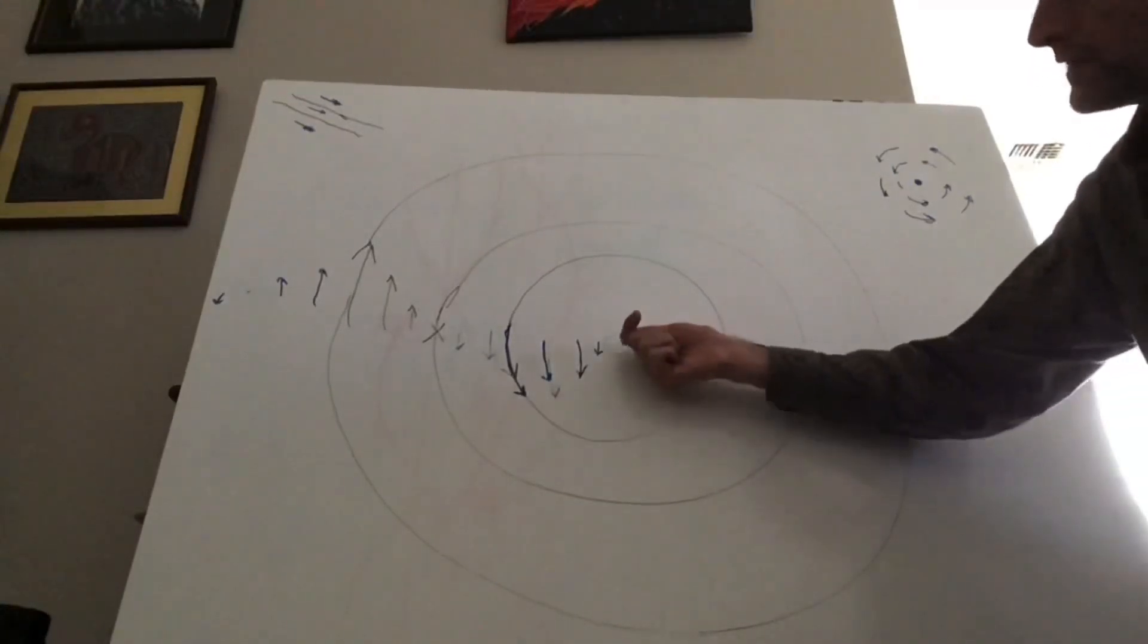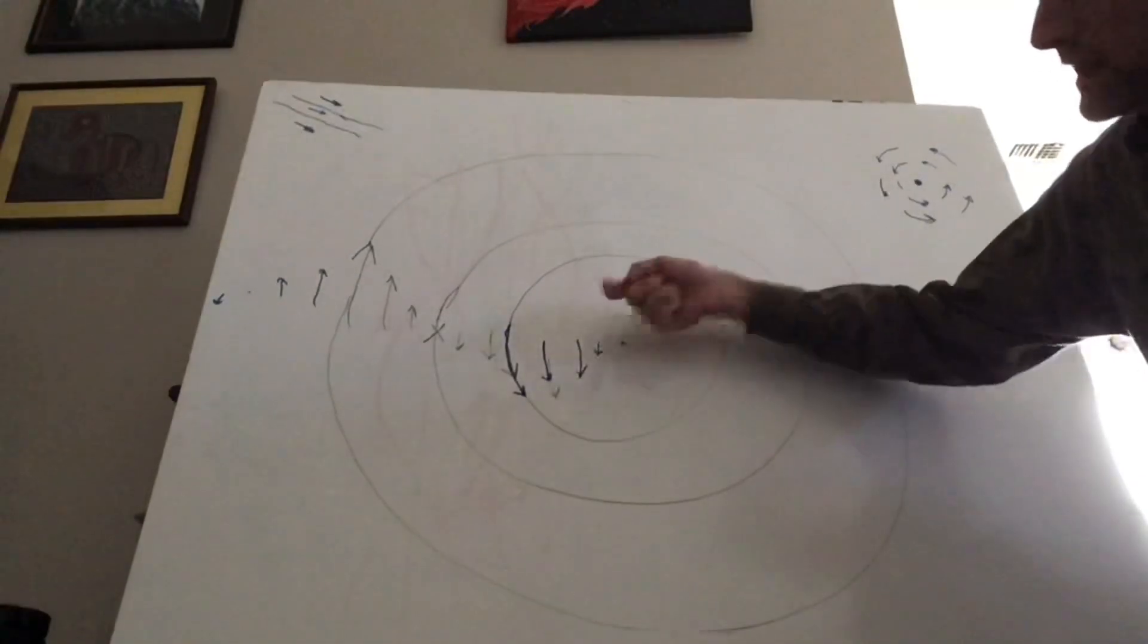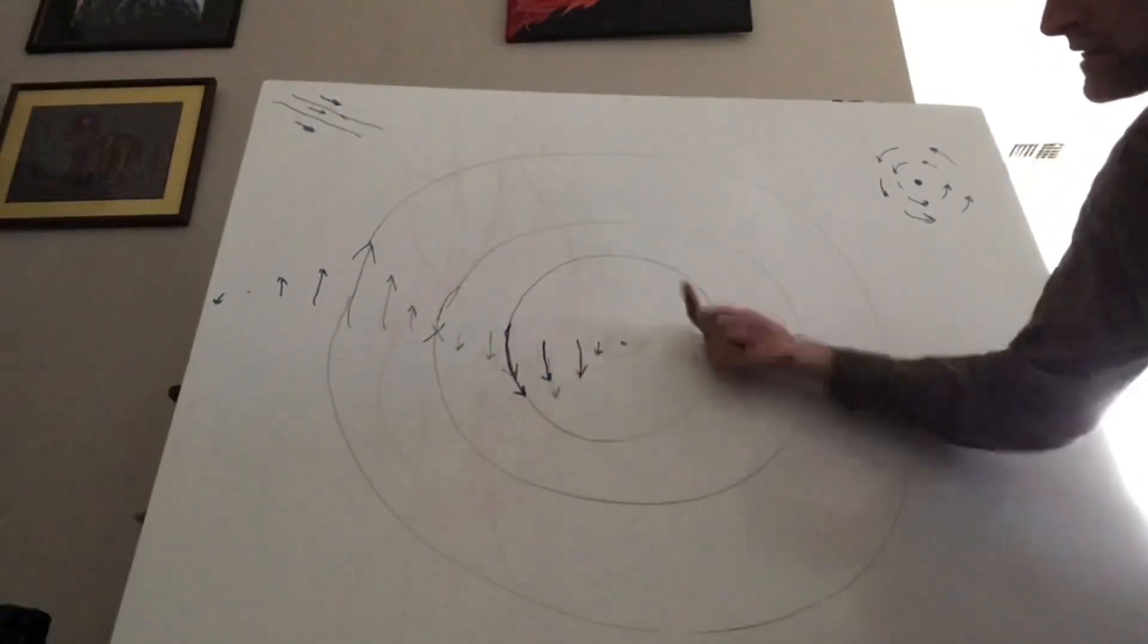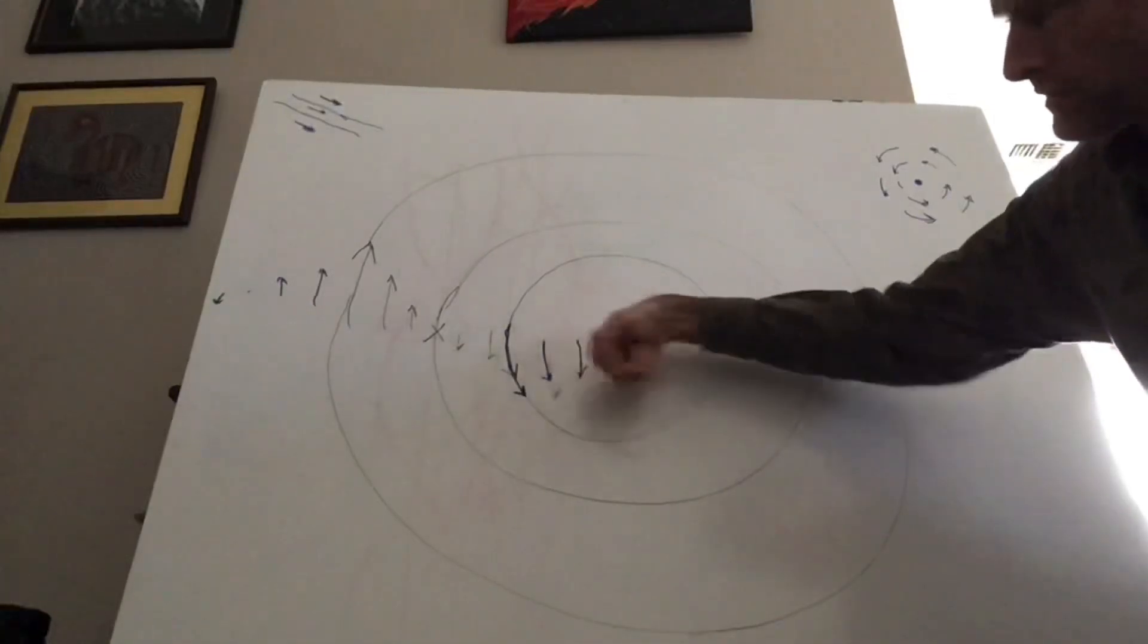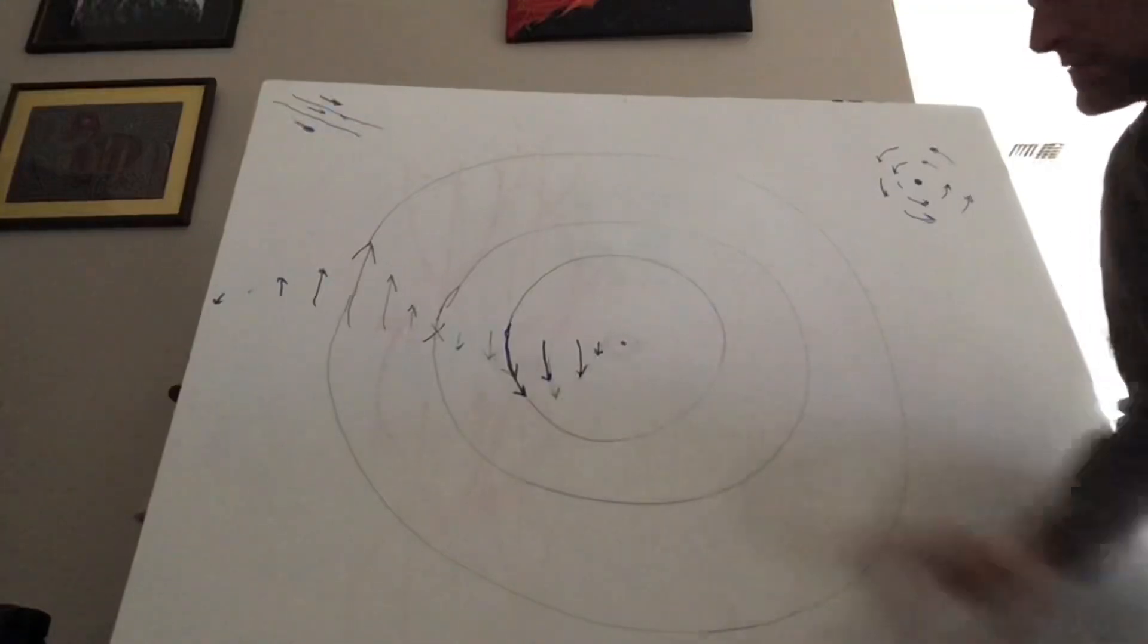It's what you get if charge is flowing along the center. A little bit out, you get a little bit more helical. Out here it's even more helical and then there it's totally around. So that's the key to the differential rotation.